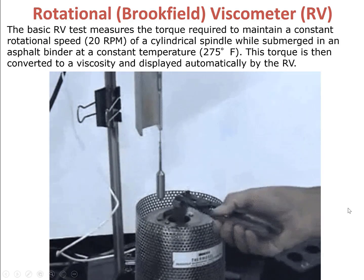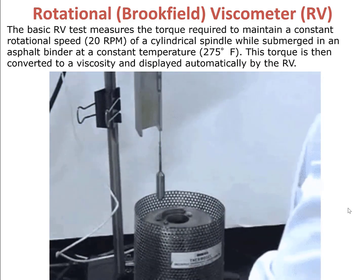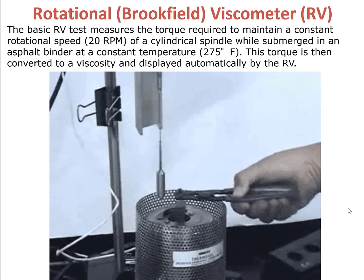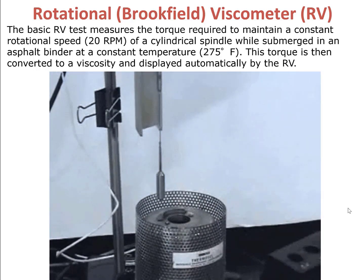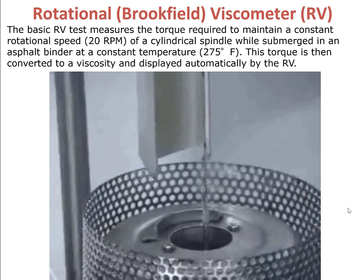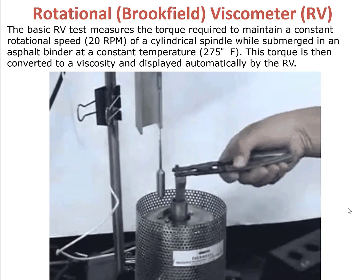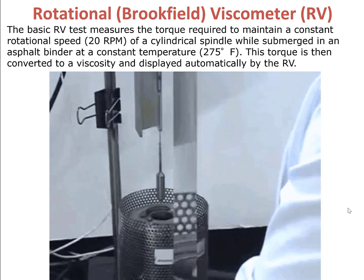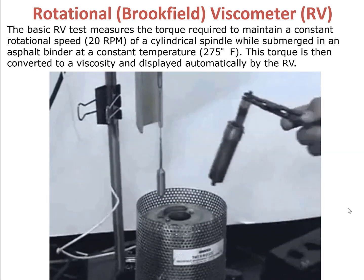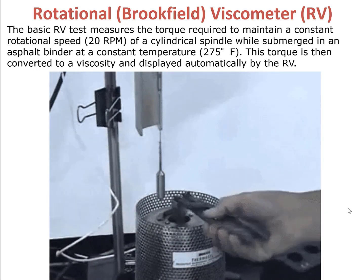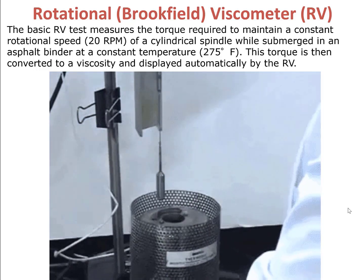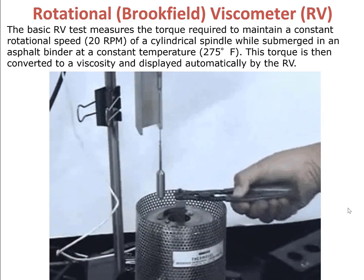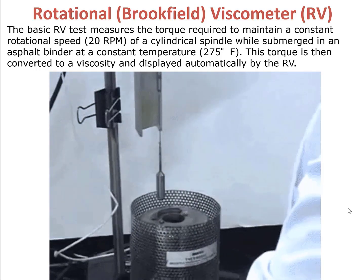We first pour the appropriate amount of asphalt binder into the sample chamber, then insert the sample chamber into the environmental chamber, and carefully lower the spindle into the asphalt binder. The viscometer will measure the torque required to maintain a constant rotational speed of 20 rotations per minute when the spindle is submerged in the asphalt binder at 275 degrees Fahrenheit. This torque is then converted to a viscosity value, which is displayed automatically by the viscometer.